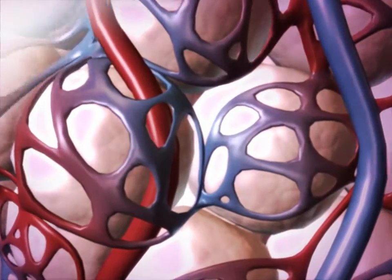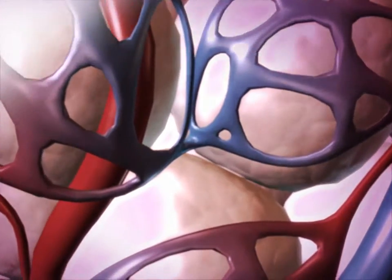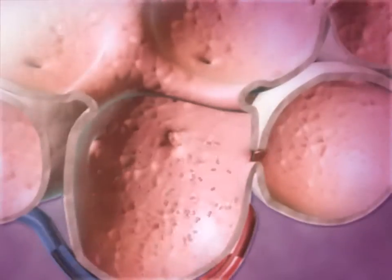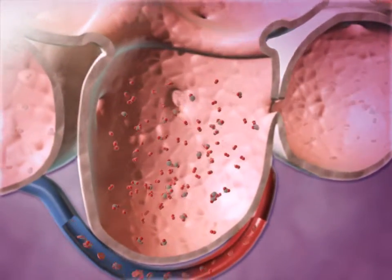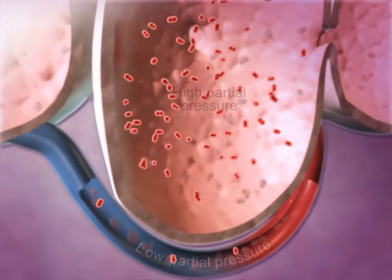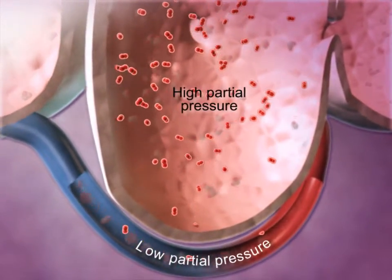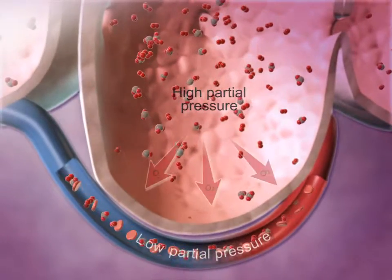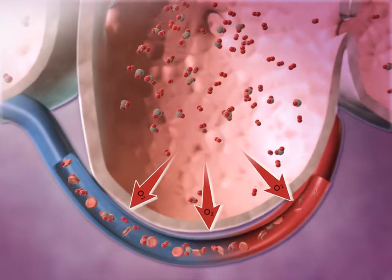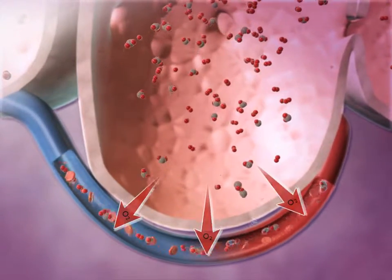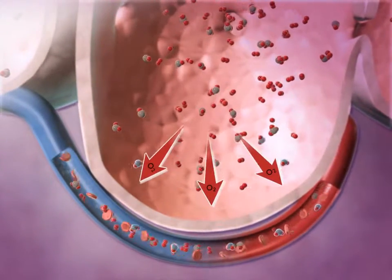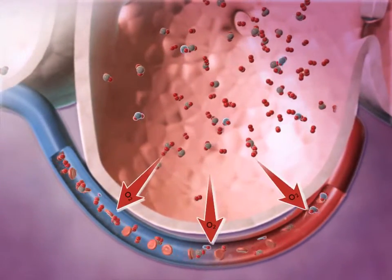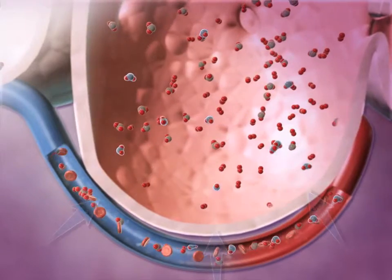The gas mixture in the alveolus has a high oxygen partial pressure, while the partial pressure of oxygen in the surrounding pulmonary capillaries is low. For this reason, the oxygen diffuses from the alveolus into the pulmonary capillary.